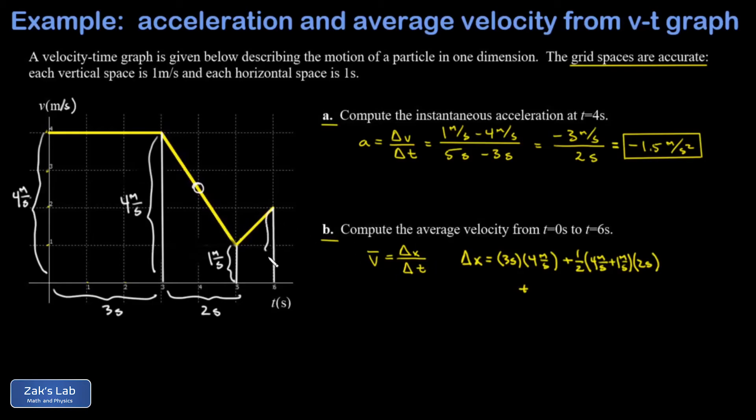And then finally I have the small trapezoid and I already have one of its heights written in the diagram, and the height on the right hand side there is two meters per second. So I add in a one half and then a one meter per second plus two meters per second times the width of the base there which is just one second.